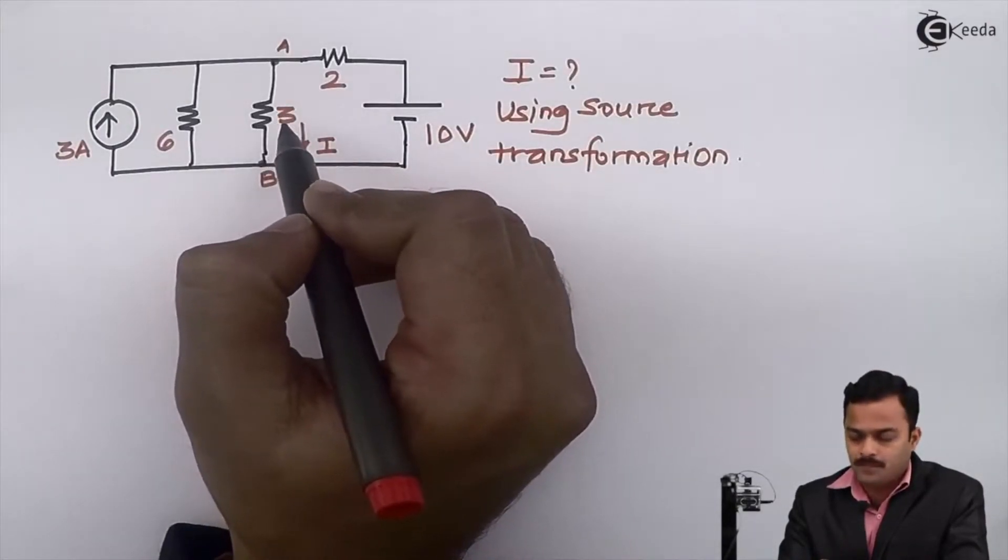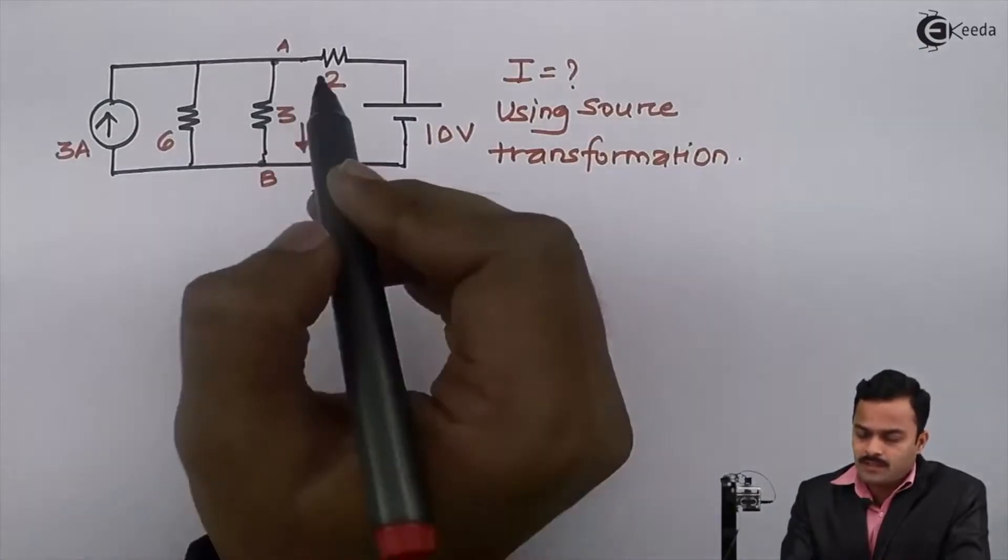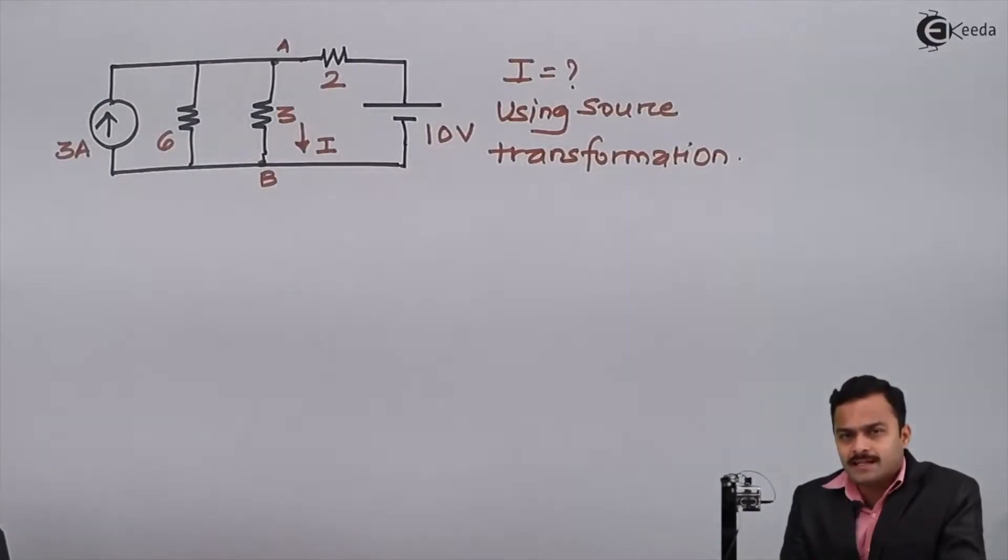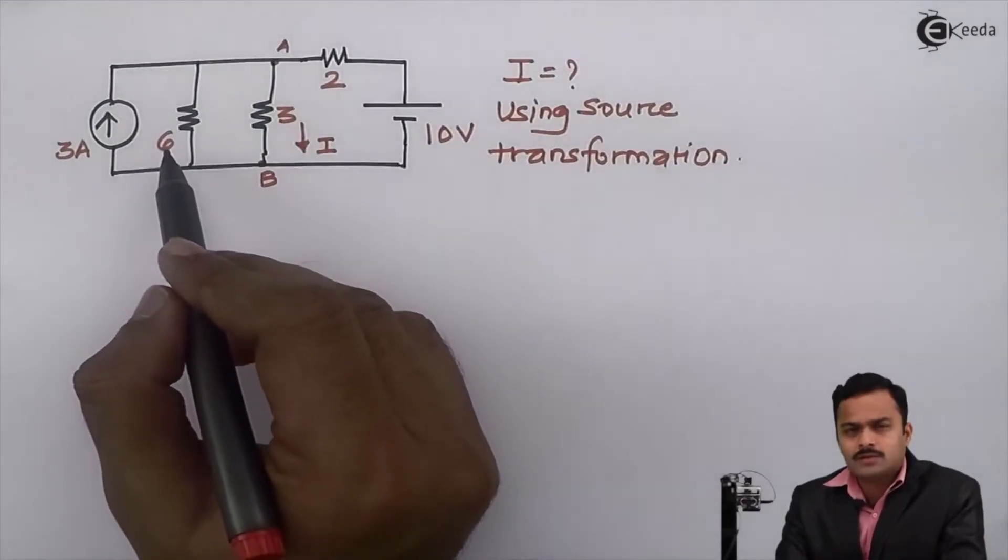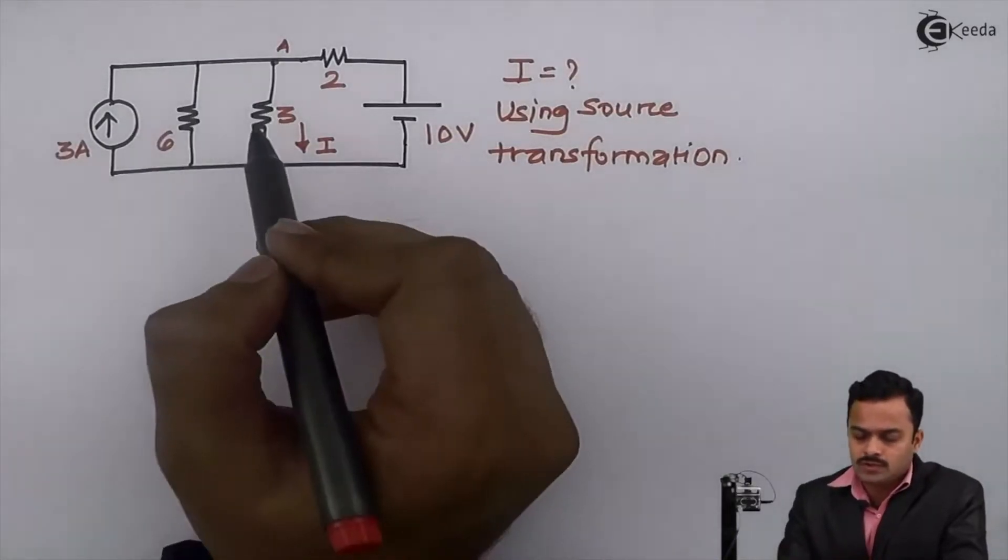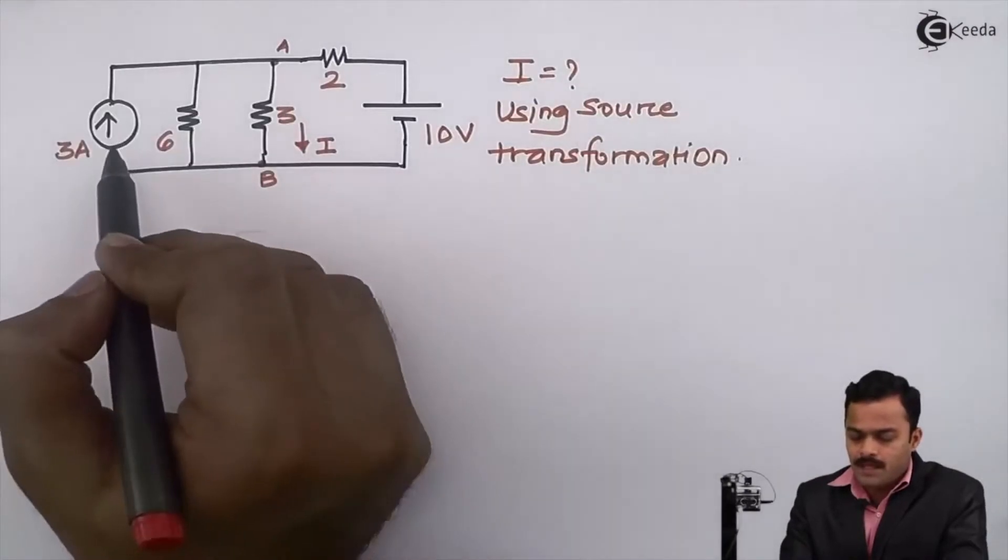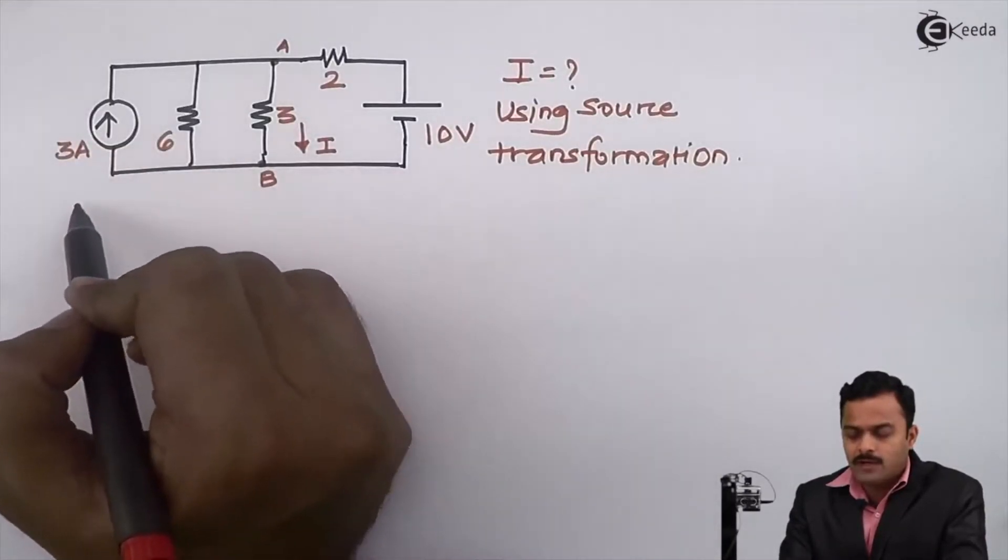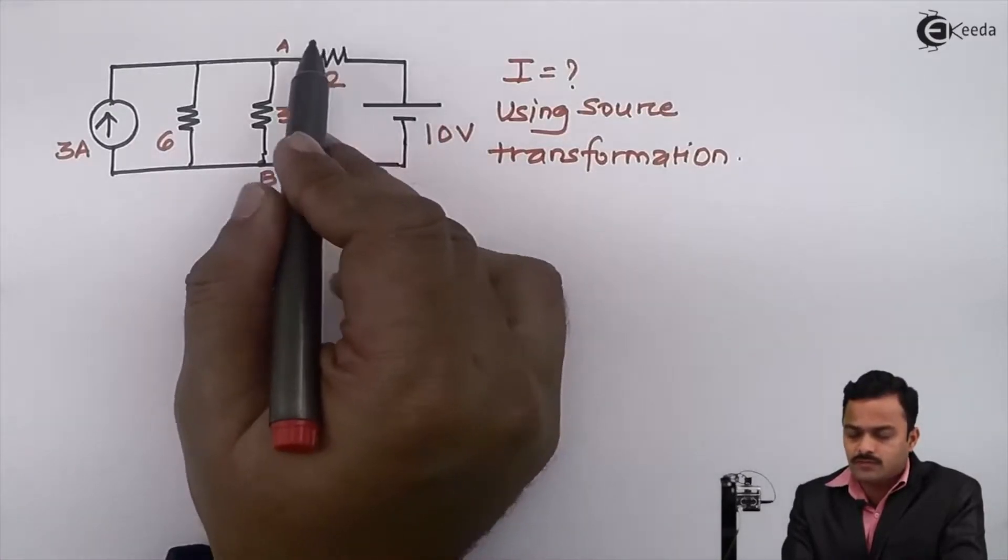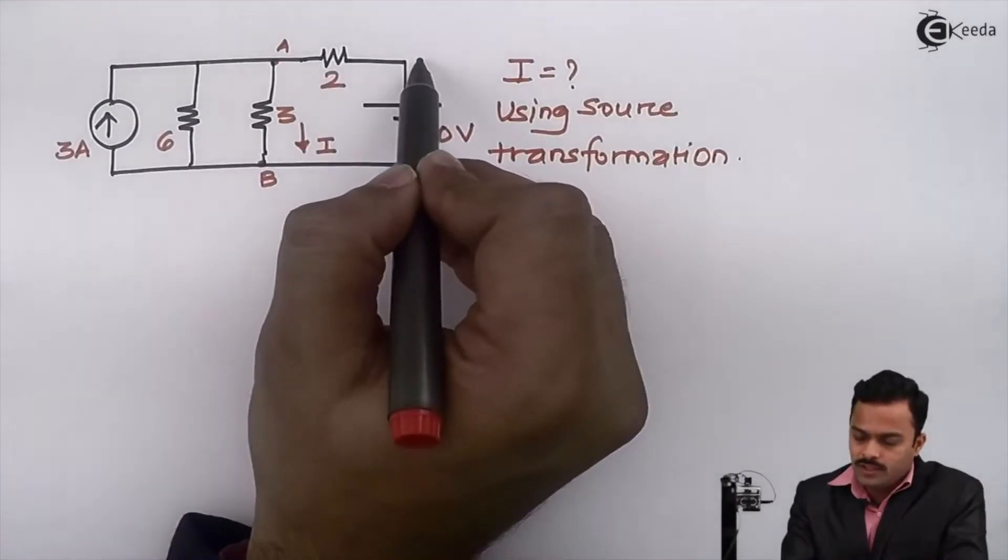I cannot touch this 3 ohm. Next, whenever sources are given, you have to check what is the use of transforming voltage into current or current into volts. It should not happen that you transform all sources every time—not required. So I will not transform this current source, I will just transform this voltage source. I'll tell you why.